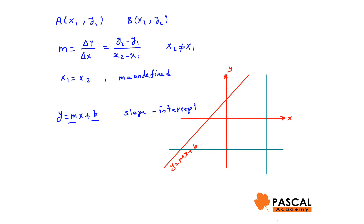To find the slope, we pick two points on the line — let's say the x and y-intercepts — and we find rise over run.